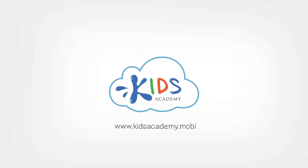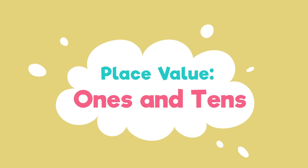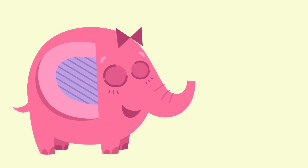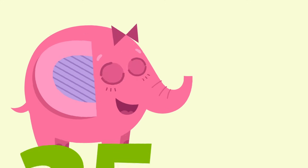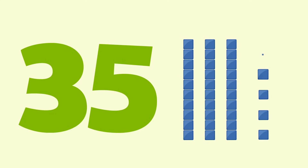Welcome to Kids Academy! When we look at a number like 35, each digit in this number has its own value. There is a number in the ones place and a number in the tens place. Let's have a closer look at each number to see its true value.